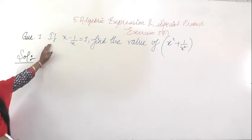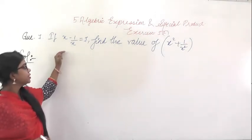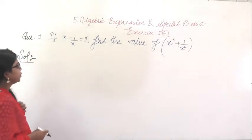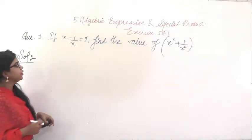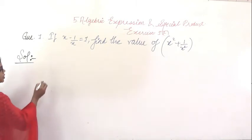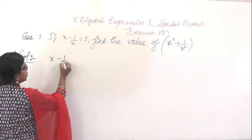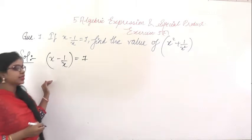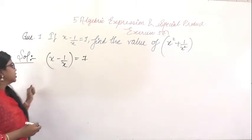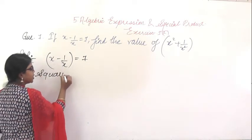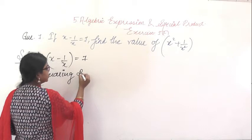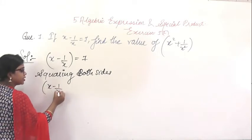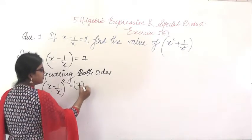This is question number 7. Here it is given: if x − 1/x = 7, find the value of x² + 1/x². This question is similar to the previous one; the only difference is the minus sign. So we will follow the same process. Squaring both sides: (x − 1/x)² = 7².